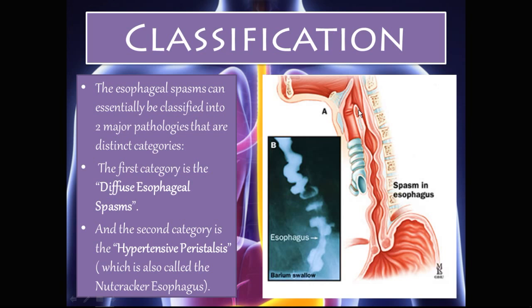We're talking about spasms that occur in this hollow muscular tube which is the esophagus. Normally the esophagus carries swallowed food down into the stomach so it can be digested, and this is done through peristalsis — small contractions that push the food along. Today we're talking about what happens when that peristalsis is no longer normal.